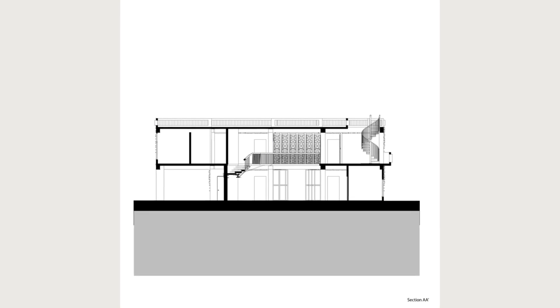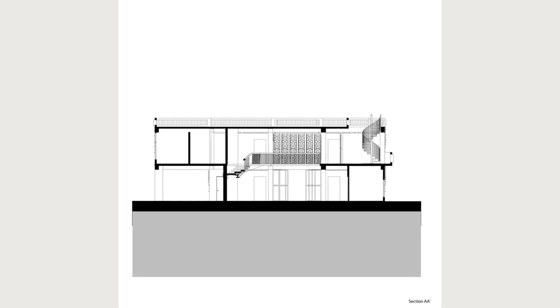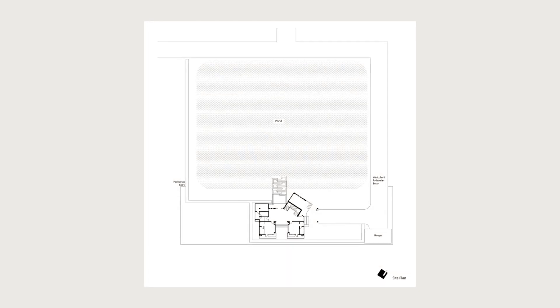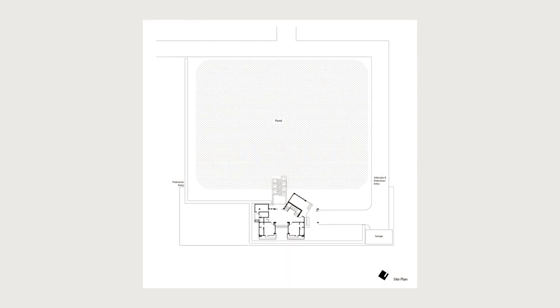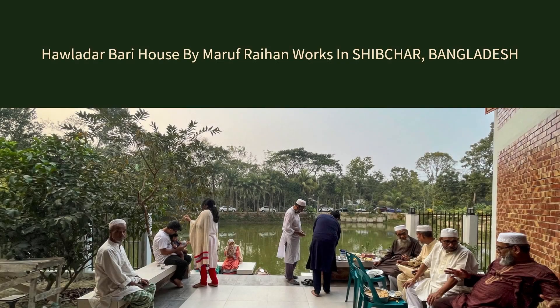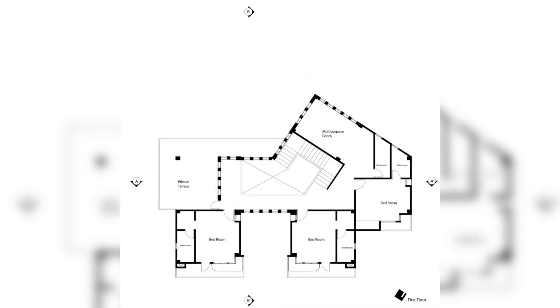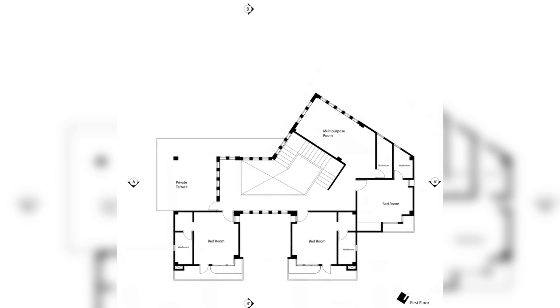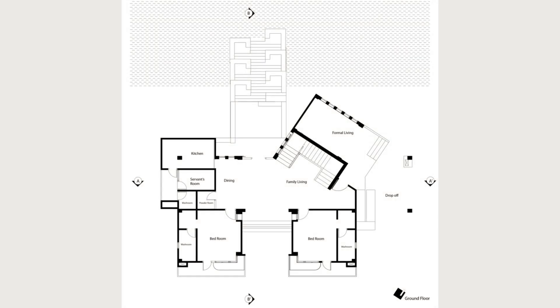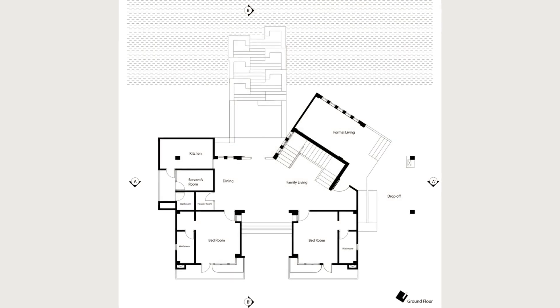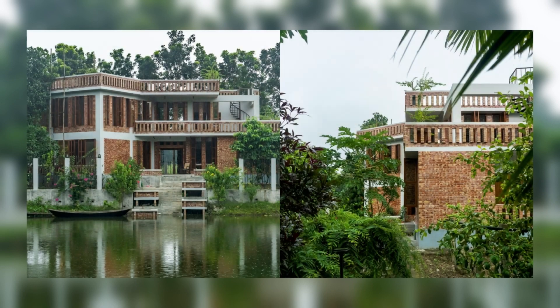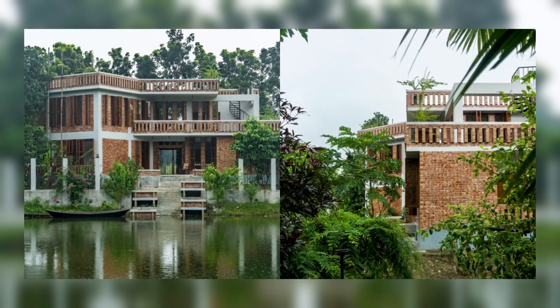Upon approaching the residence, an entry foyer leads to a semi-open veranda, generously sized to accommodate a large prayer space to pray together. This area is designed as a traditional kakaragar, meaning the public living room. The layout of the building also considers the plot's northward tilt, aligning the prayer space to face west toward the Qibla.